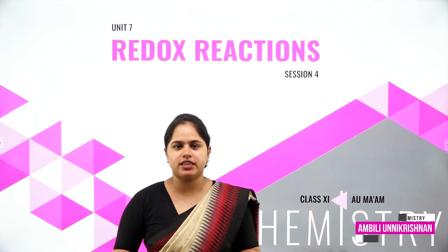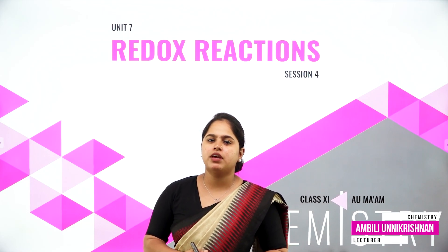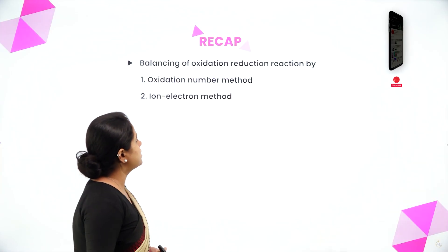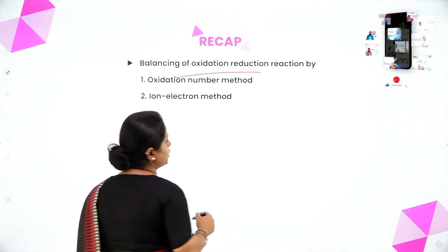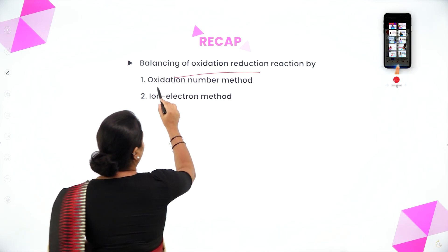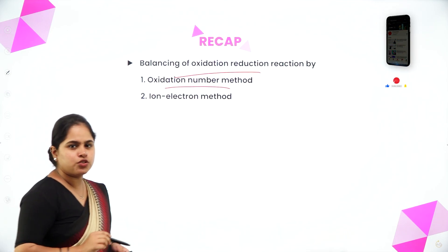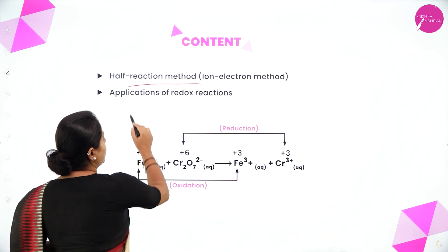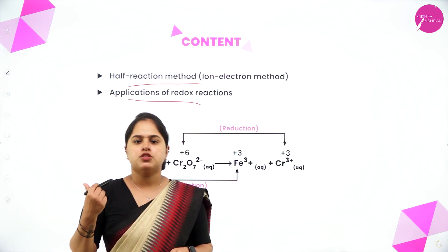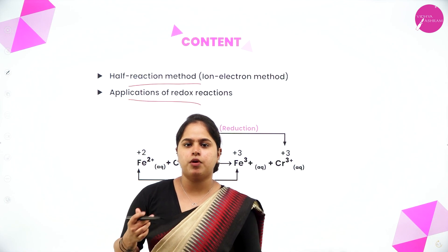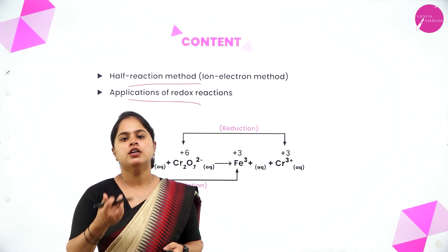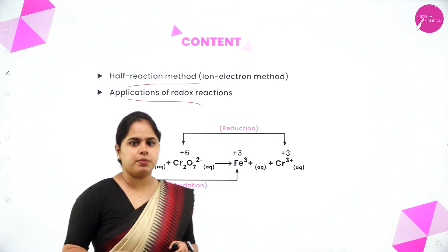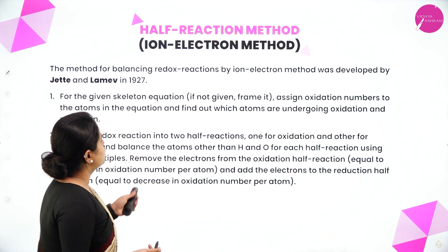Hello everyone, this is Ampli Unikrishan from the Department of Chemistry. Today we are back with session 4, the last session of the chapter on redox reactions. In the last session, we discussed balancing of oxidation-reduction reactions using the oxidation number method. In today's session, we are going to study the half reaction method or ion electron method, as well as the applications of redox reactions. We will also discuss balancing in basic medium using both the oxidation number method and the ion electron method.